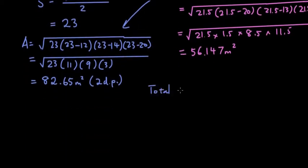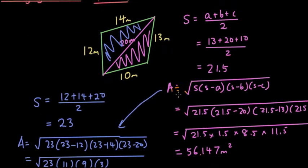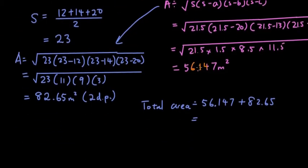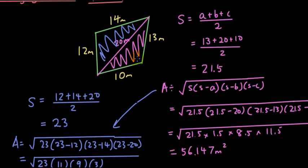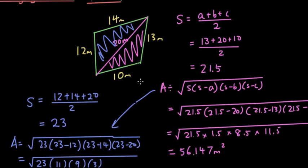And I forgot how I rounded it for the other one, but basically I now add the two areas together. So total area equals the two areas, so 56.147 plus 82.65. And that is the area of the quadrilateral, the total area. So the total area is 138.79 or 138.8 meters squared rounded to one decimal place. And that is the total area of a quadrilateral. So we're going to do another similar one.